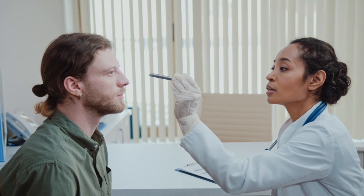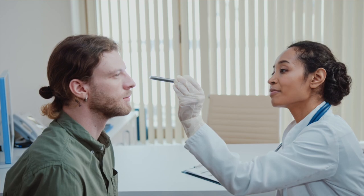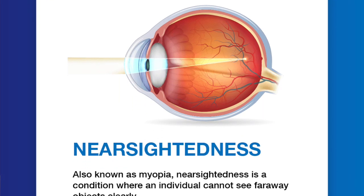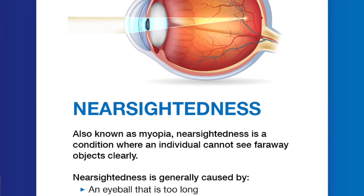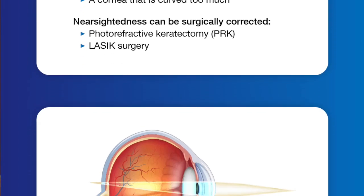If you suspect that you or someone you know may have a vision problem, it's important to schedule an eye exam with an optometrist or ophthalmologist. They can perform a comprehensive eye exam and prescribe corrective lenses or other treatments as needed. Nearsightedness is diagnosed through a comprehensive eye exam that includes a visual acuity test, a refraction test, and an examination of the retina.